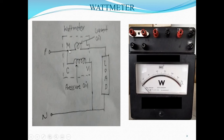The first terminal is M, that is the main terminal. The second one is L, that means the load terminal. The third one is C, that is the common terminal. And the fourth one is V, that is the voltage terminal. In the watt meter, there are two coils: the first one is the current coil, which is connected between M and L, and the second one is the pressure coil, also called the voltage coil, which is connected between C and V.